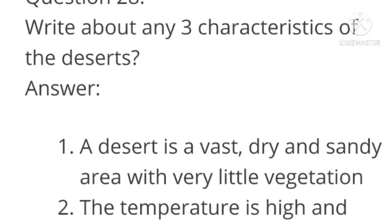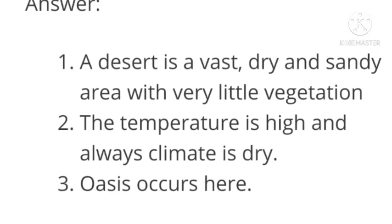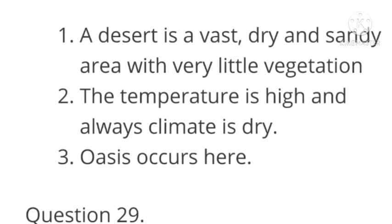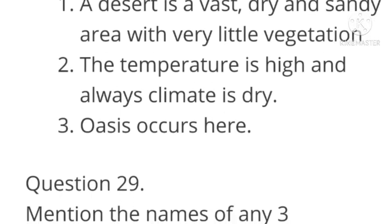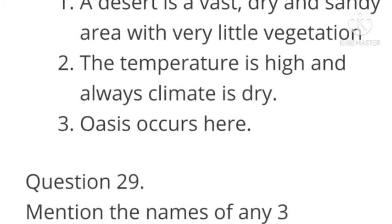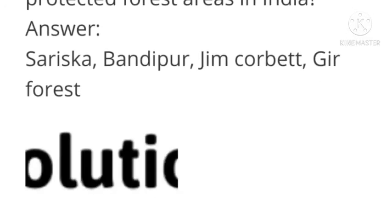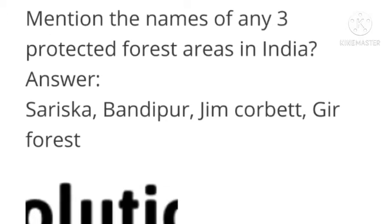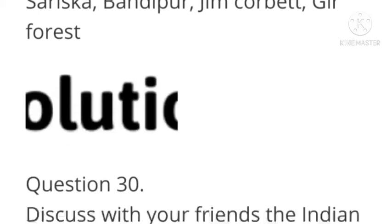Question number 28: Write about any three characteristics of a desert. Answer: A desert is a vast, dry and sandy area with very little vegetation. The temperature is high and the climate is always dry. Oases occur here. Question number 29: Mention the names of any three protected forest areas in India. Answer: Sariska, Bandipur, Jim Corbett, Gir Forest.